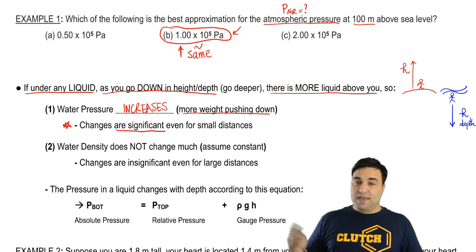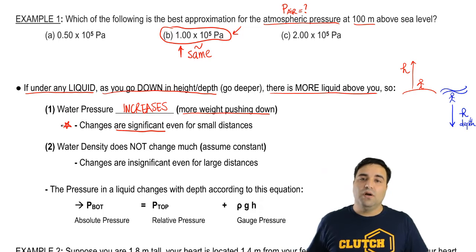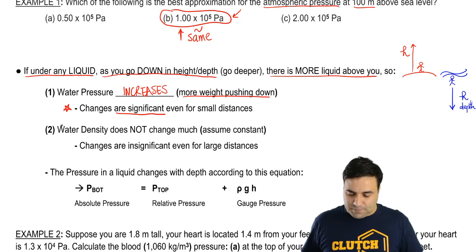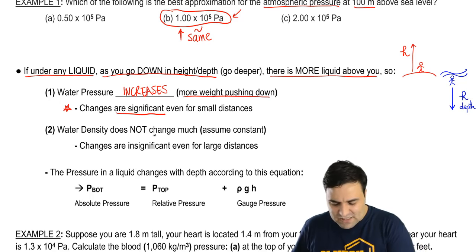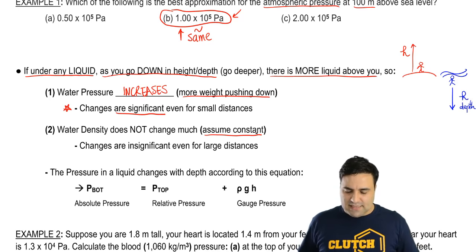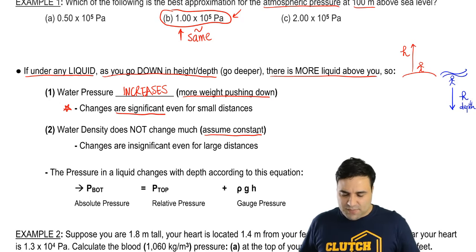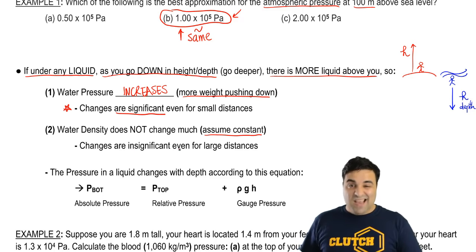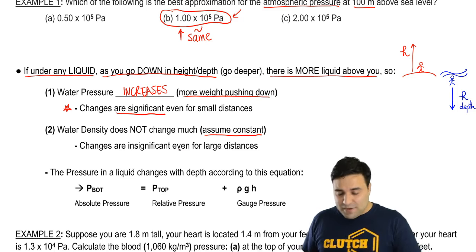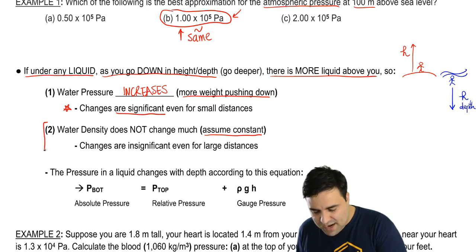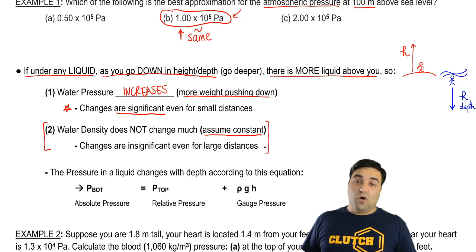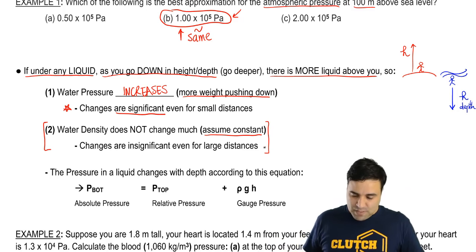Water density does not change much, so we're always going to assume that water density is constant, because the changes are very insignificant even for very large distances. You can pretty much assume water density is always the same.